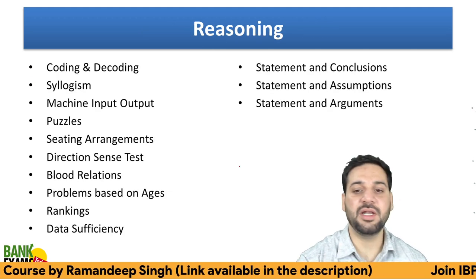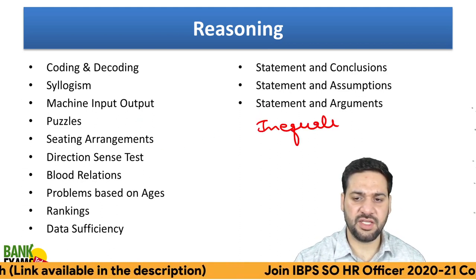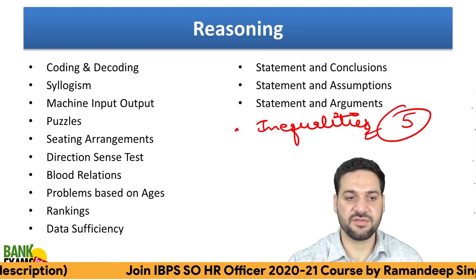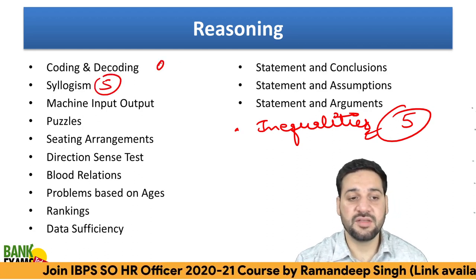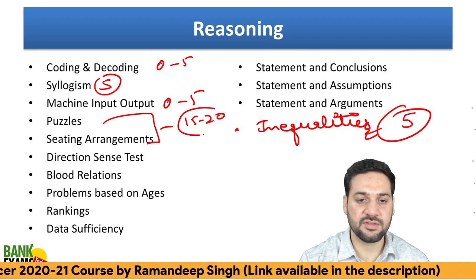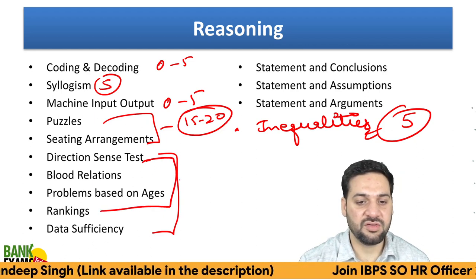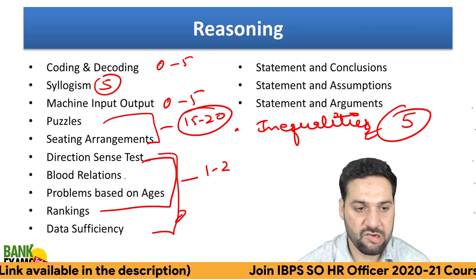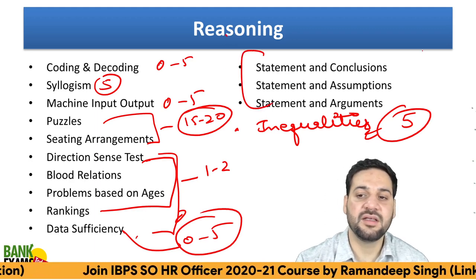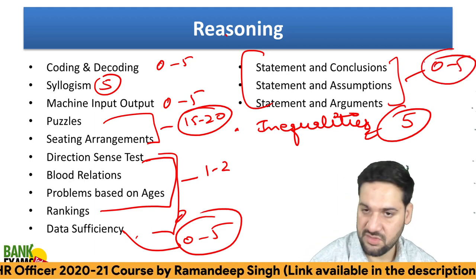For Reasoning Ability, Inequalities is a very important topic — almost 5 questions every time. Syllogisms, Coding-Decoding (sometimes), Machine Input-Output, Puzzles and Sitting Arrangement (15–20 questions from these two). Then 1–2 questions each from Blood Relations, Problems Based on Ages, Direction Sense Test, and Data Sufficiency (0–5 questions). Critical Reasoning — Statement-Assumption, Statement-Arguments, Course of Action — almost always 5 questions.